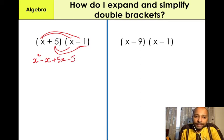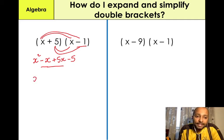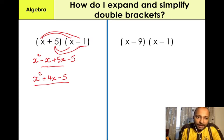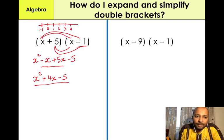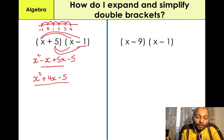At this stage we need to simplify by collecting like-for-like terms. We have negative 1X plus 5X, which equals 4X. So we have X squared plus 4X minus 5. That's our final answer. On the number line: starting from negative 1, we add 5 — that lands on 4. So the overall answer is X squared plus 4X minus 5.